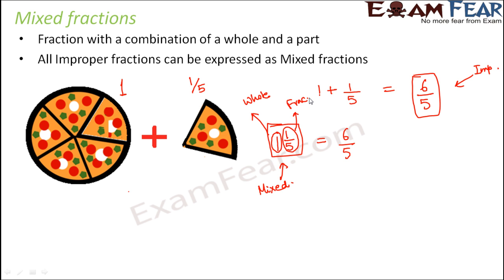Now you might ask how do I know that one and one by five is equal to six by five. We will talk about how to convert improper fractions to mixed fractions and vice versa. But for now, just understand that mixed fractions are improper fractions represented in such a way that you have a whole number part and a fractional part.